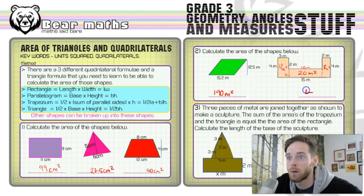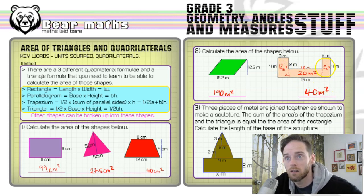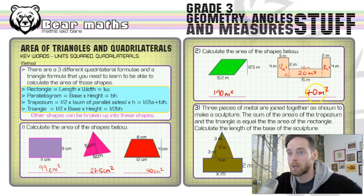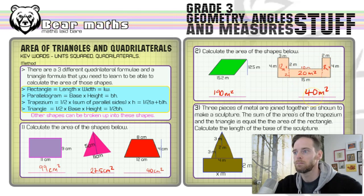Adding the three areas together: 12 plus 8 plus 20 equals 40 meters squared. So 40 meters squared is the answer to that compound shape area question.